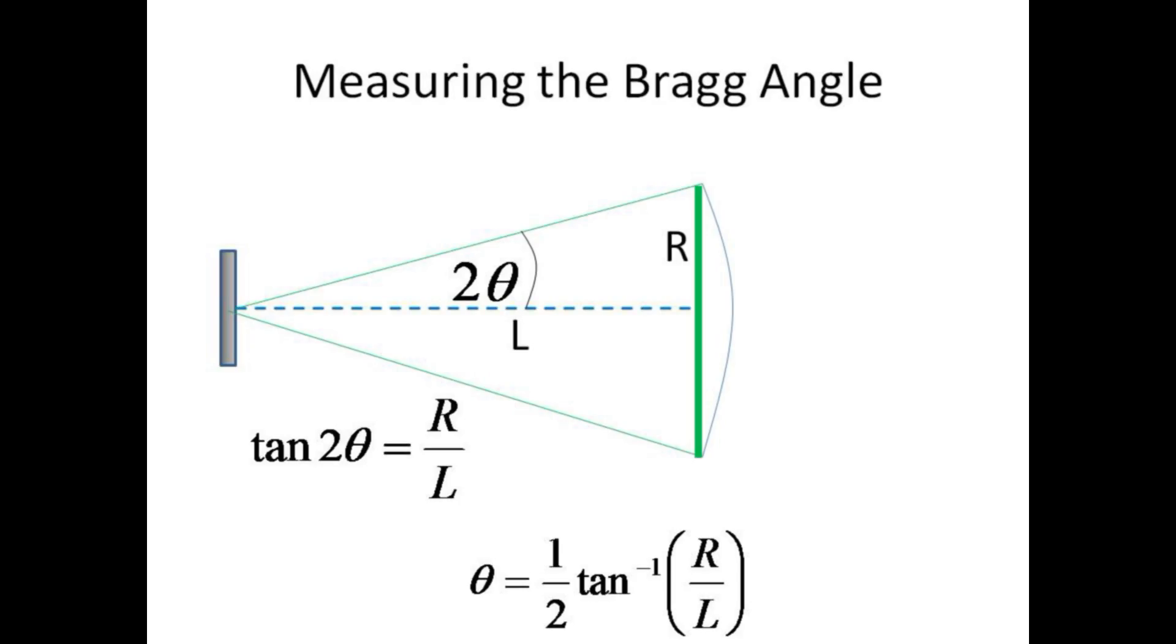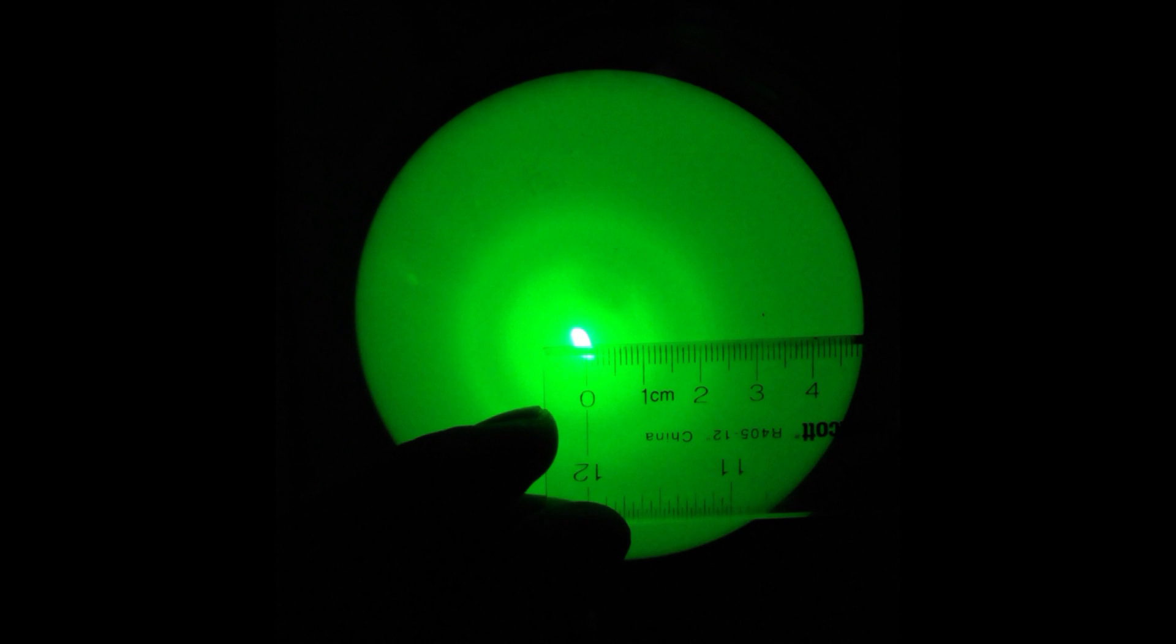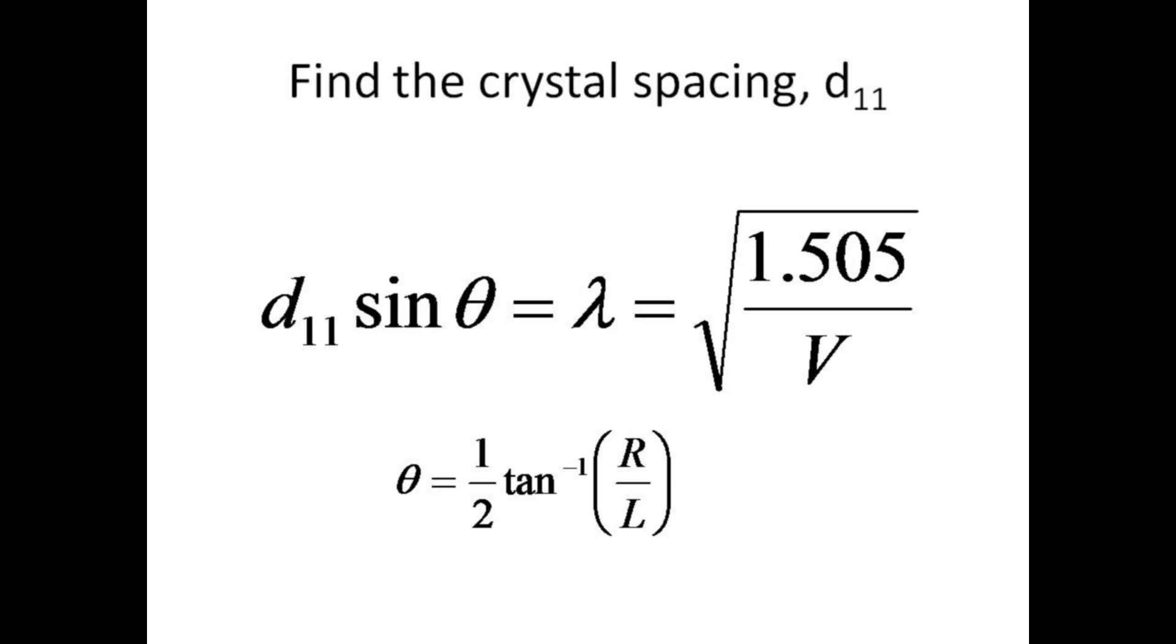The angle for constructive interference is determined by measuring the radius r of the diffraction ring and the distance L from the graphite crystal to the screen. Because this is a reflected beam, it suffers a reflection of 2θ. You may just use a ruler to measure the radius of the outermost ring. Using the outermost ring will give you the smaller of the two spacings in the graphite crystal. Using this technique, you'll have measured a size comparable to the size of a single atom.